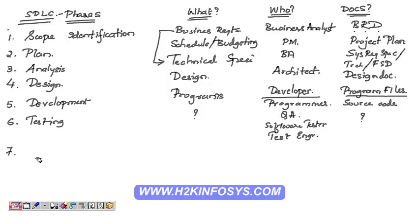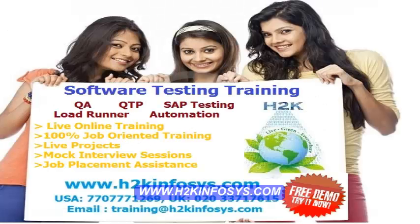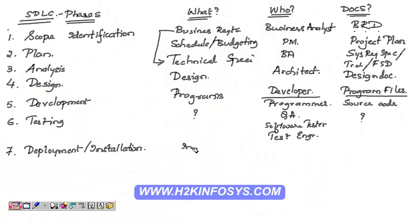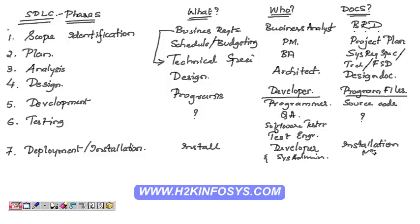After testing, it is time to release the software to the client. Release means we install the software on the client machine — this is called deployment. Deployment and installation are one and the same. It is done by the developers with the help of a system admin. The document prepared here is called the installation manual, which contains all the steps to install the software and the system requirements.